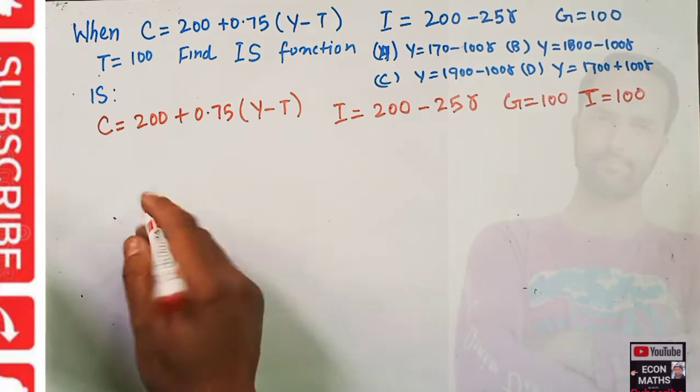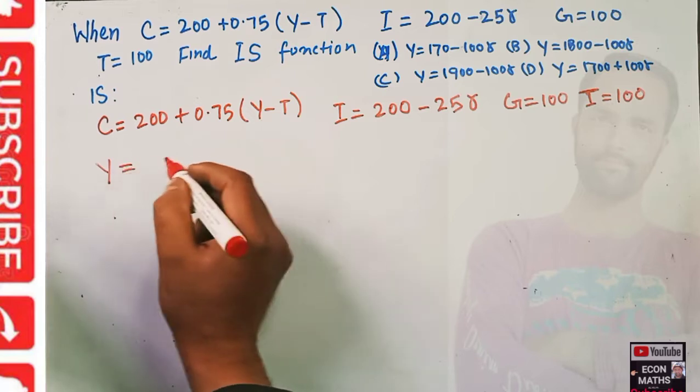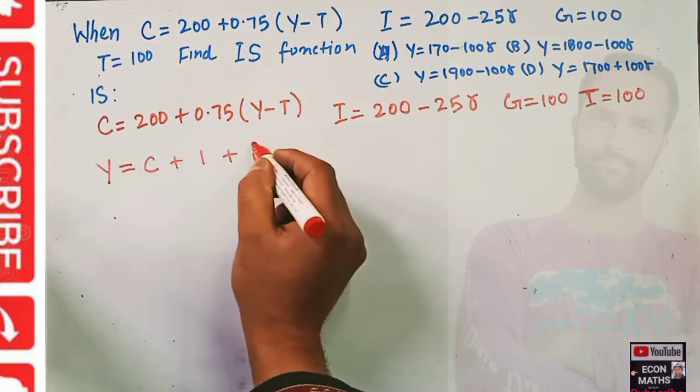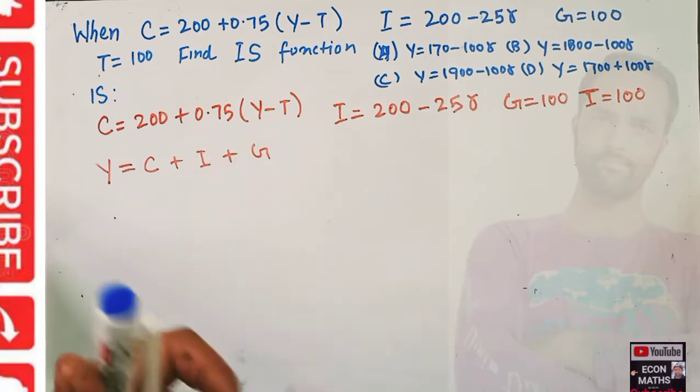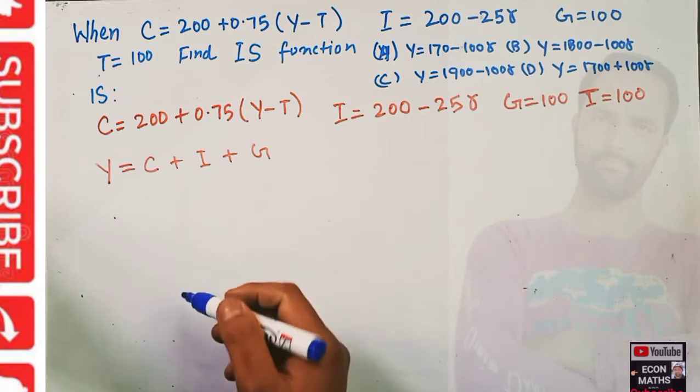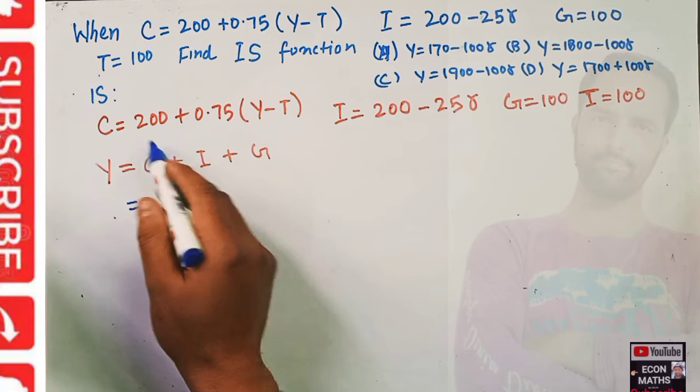To find the IS equation, we use the national income identity: Y = C + I + G. We don't have the foreign sector here, so we have only three terms on the right hand side.